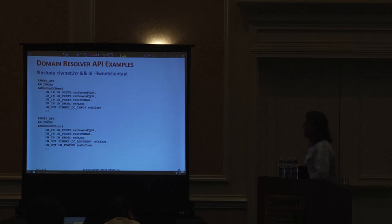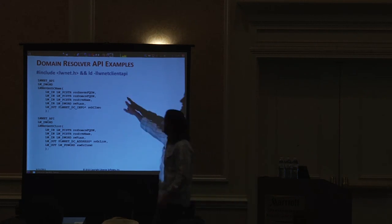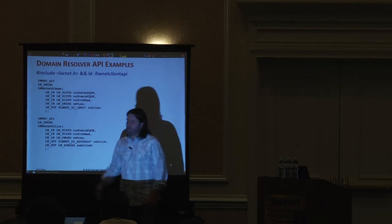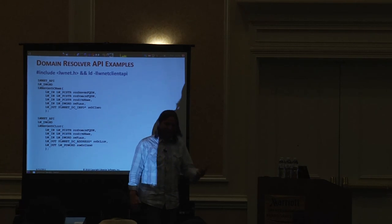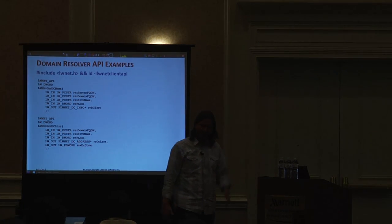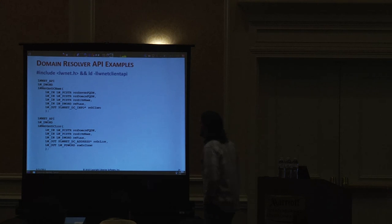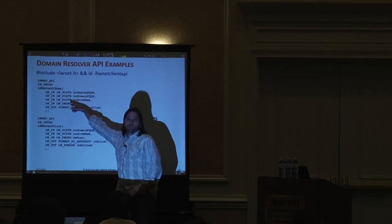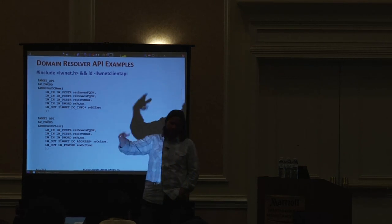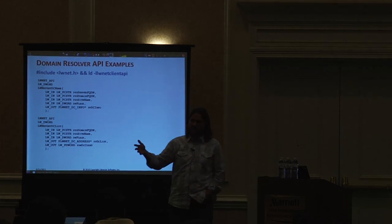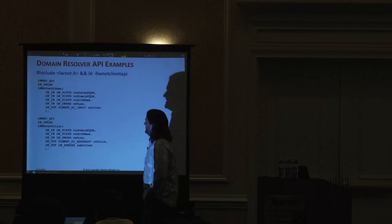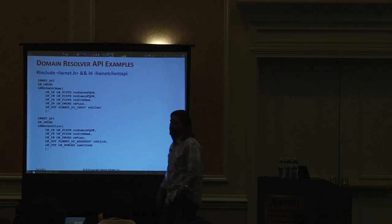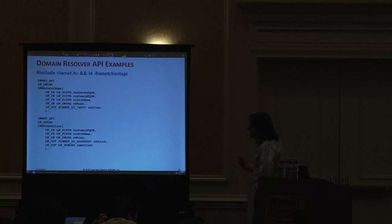Some API examples: the get DC name function — you'll see a lot of Hungarian notation, which is historical. We're moving away from it, but there's a standard set of typedefs for structure definitions as well as 32-bit and 64-bit values. It's a common coding convention throughout the entire code base.